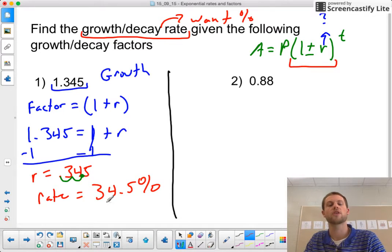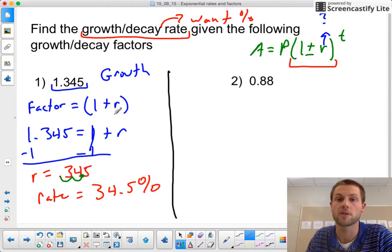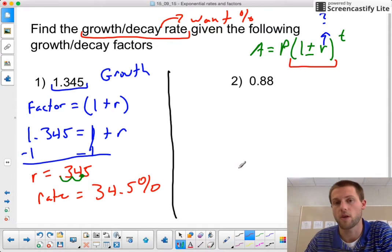If you wanted to check, you can go the other direction. You can start with this as a rate and see what the growth factor would become, and you should get the same exact thing. If you don't, then you need to see what you did wrong there.